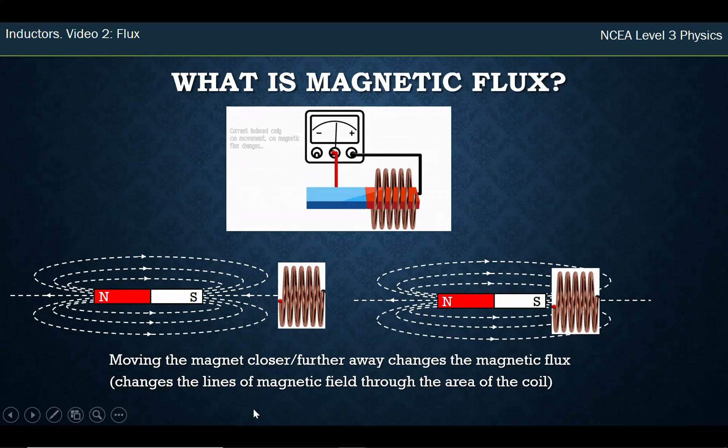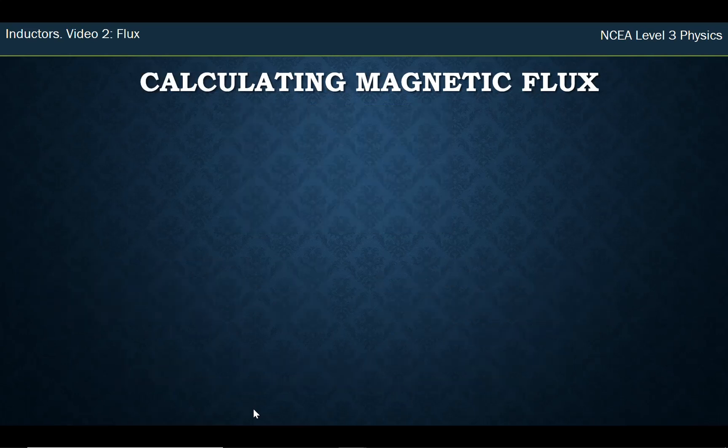So moving it closer and further changes the lines of field going through the coil, which is effectively the same as changing flux, and you're going to learn in videos coming up. But it's not how much flux there is in the coil that's important, but changing flux is so important, changing from not much to a lot, changing from a lot to not much, that's what generates electricity, and we're going to do a whole video on changing flux. But you need to know what flux is, so that we can investigate what it means to change flux.